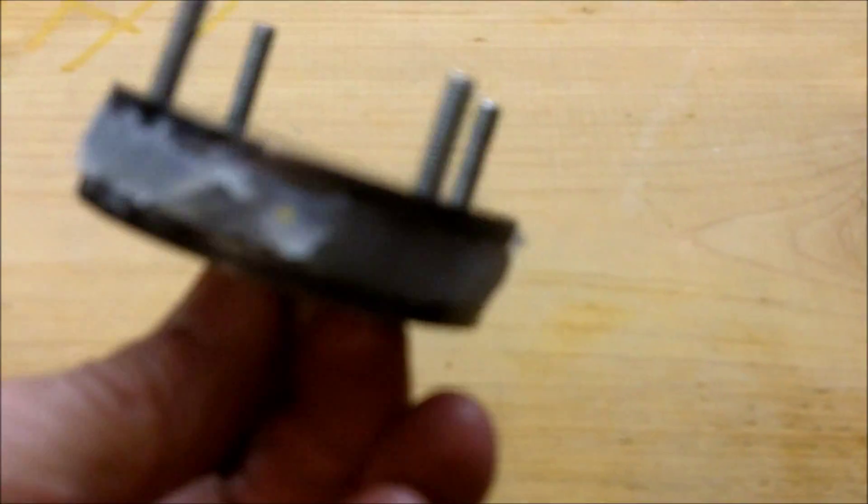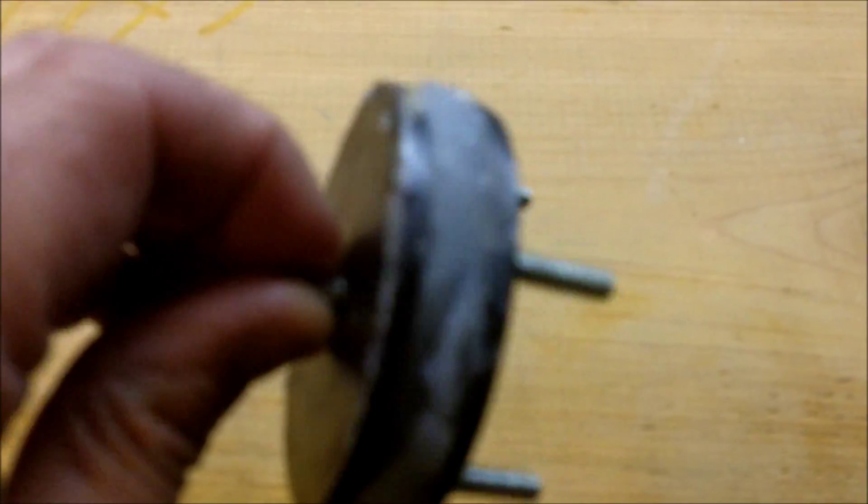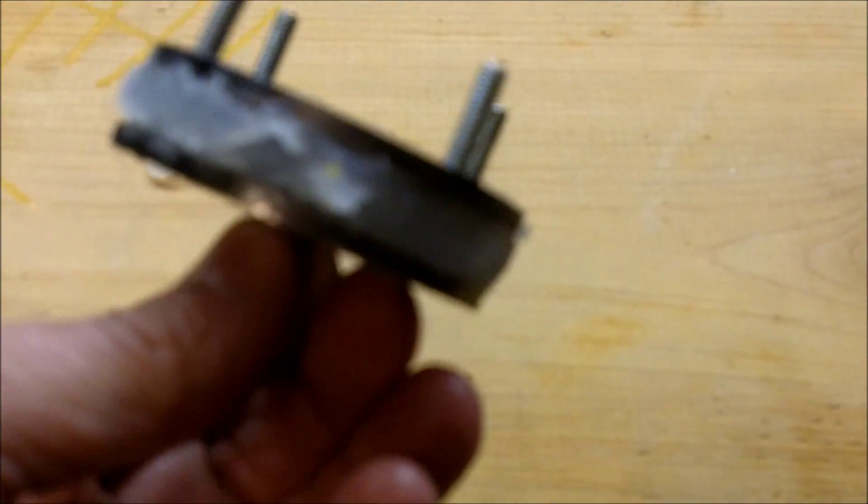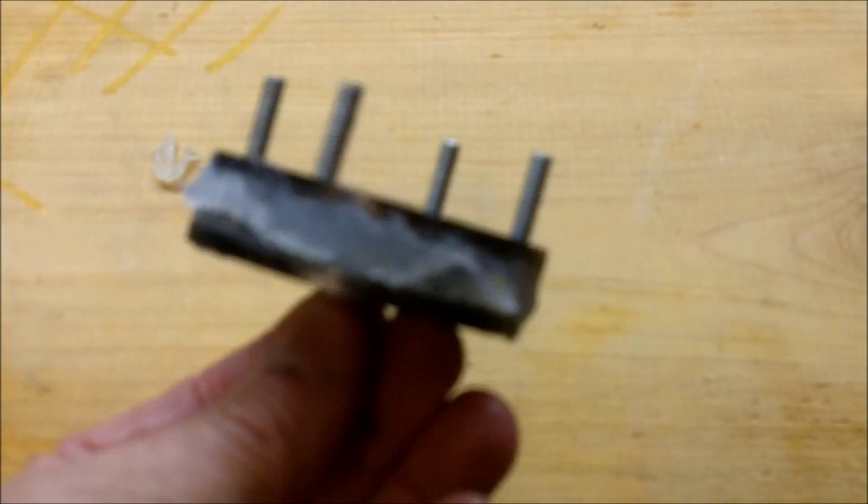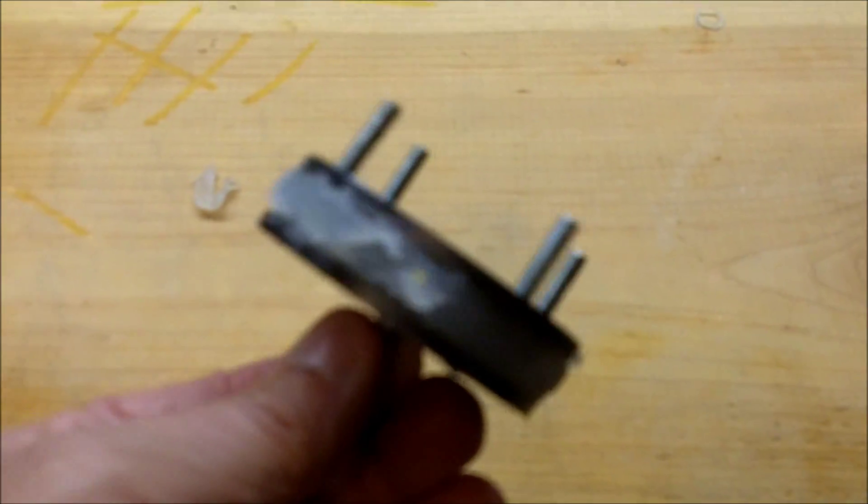There's two things that are just fantastic vibration absorbers. One is silicone and the other is sorbathane. So I thought I would try the silicone method first since it's a lot easier to obtain.